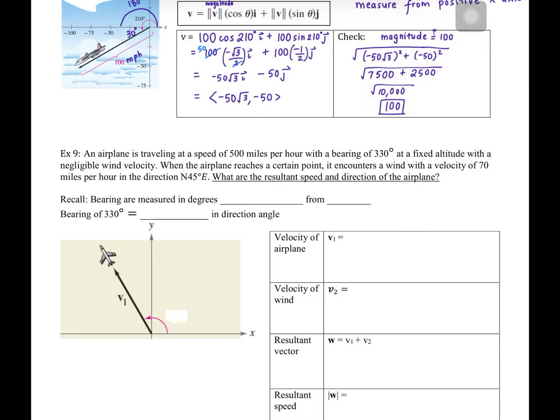In this lesson you're going to find the resultant speed and direction of the airplane. The problem states: an airplane is traveling at a speed of 500 miles per hour with a bearing of 330 degrees at a fixed altitude with a negligible wind velocity. When the airplane reaches a certain point, it encounters a wind with a velocity of 70 miles per hour in the direction north 45 degrees east. What are the resultant speed and direction of the airplane?